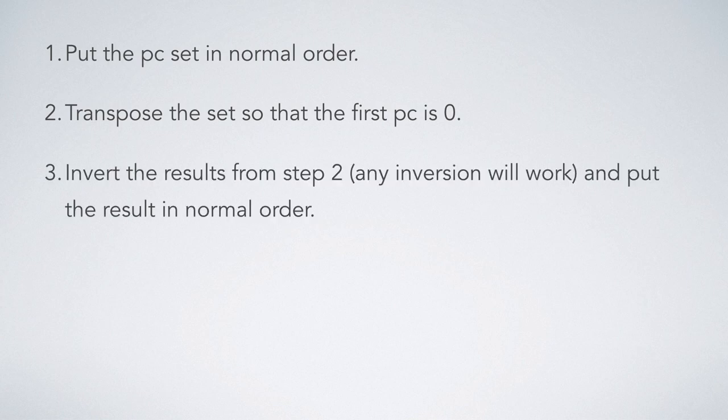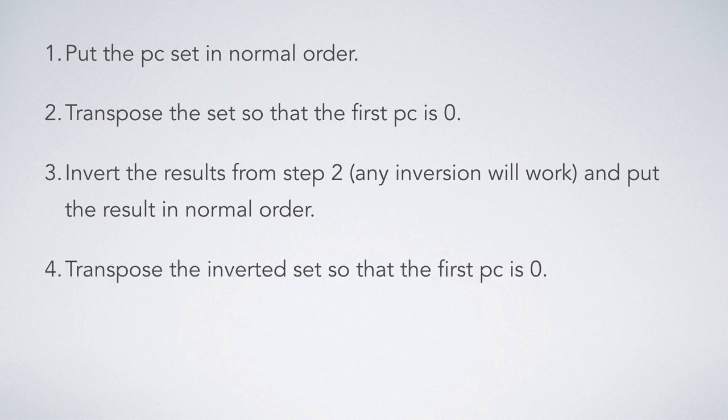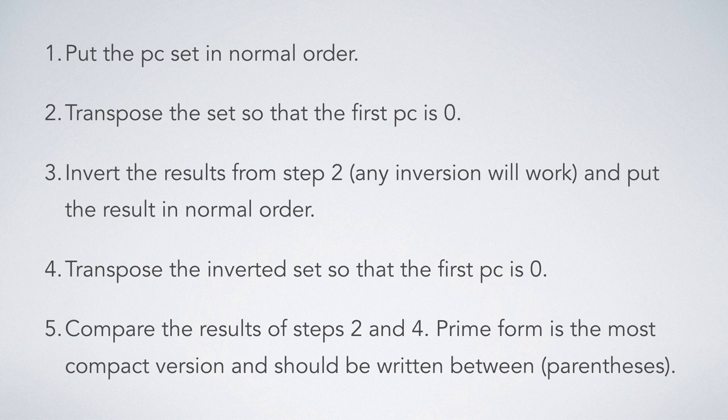Invert the results from step two, any inversion will work, and put the result in normal order. Transpose it so that the first pitch class is zero. And then compare the results of steps two and four. Prime form is the most compact version, and should be written between parentheses.